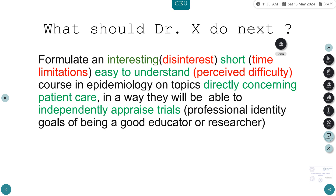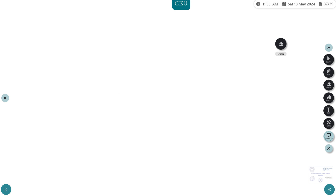So what should Dr. X do next? Given that the identified barriers were disinterest, time limitation, and perceived difficulty, he could formulate an interesting, short, easy-to-understand course in epidemiology on topics directly concerning patient care — allowing physicians to independently appraise trials while considering professional identity goals of being a good educator or researcher.